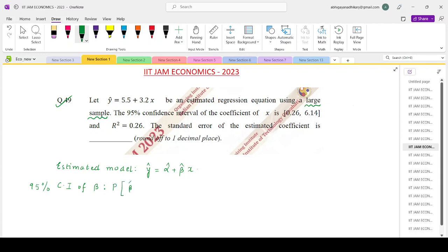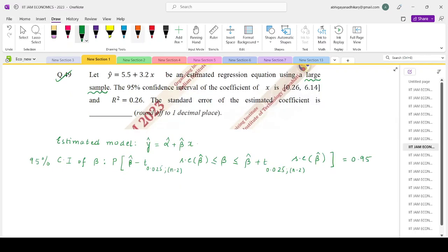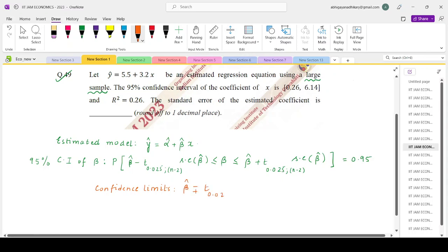Probability of beta hat minus t of 0.025 n minus 2 standard error of beta hat less than equals to beta less than equals to beta hat plus t of 0.025 n minus 2 standard error of beta hat. This equals 0.95 where our confidence limits are beta hat plus minus the critical value of the t distribution into standard error of beta hat.